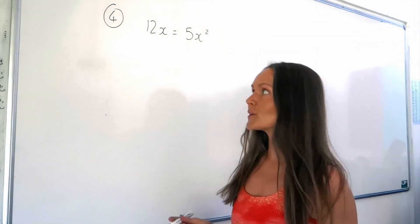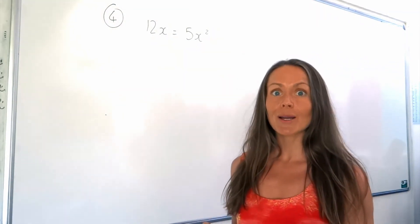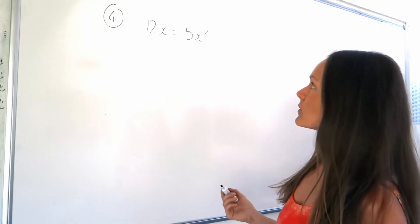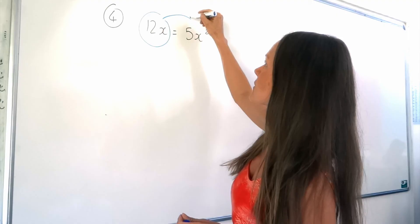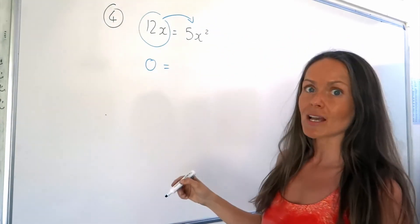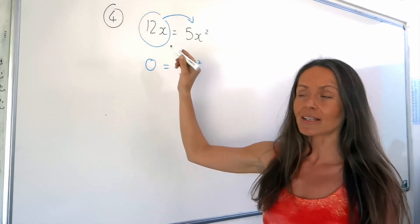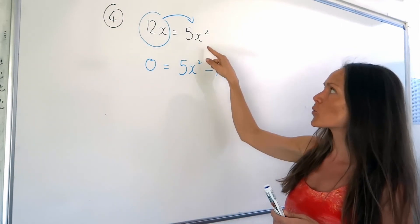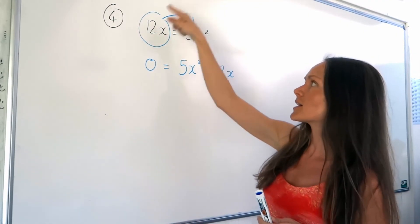Here's my final example. Notice how in all the other questions the quadratic is always equal to 0 — it has to equal 0 before you can solve. On this one we need to make it equal 0 first. I'm going to move the x term to the other side of the equation so I've got 0 on the left-hand side. The 5x squared stays the same, and this changes to a negative 12x. I'll try to keep the x squared term positive, which is why I moved the 12x over here rather than the 5x the other way.